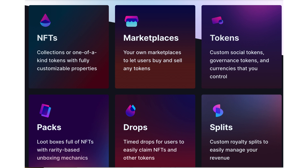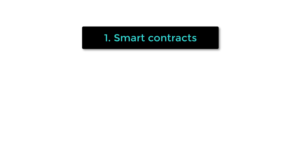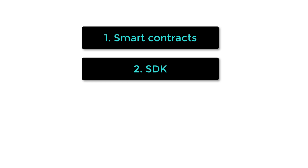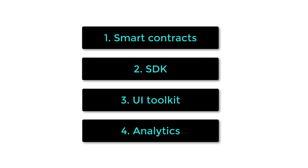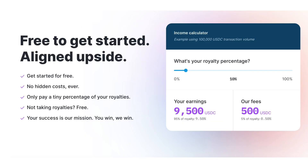ThirdWeb provides three kinds of tools to build your Web3 applications: smart contracts, an SDK to easily interact with smart contracts from the front-end, and ready-to-use UI components to quickly build your front-end. ThirdWeb also gives you advanced analytics for your project. It's free to use — you only pay a percentage of the royalties you receive, if any.